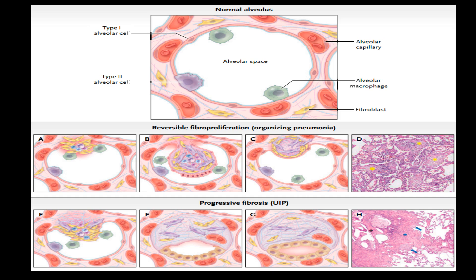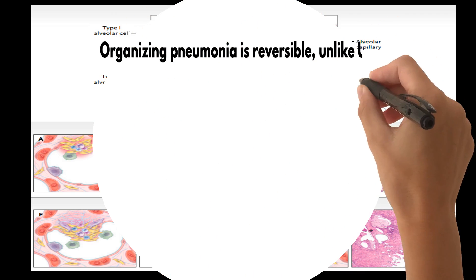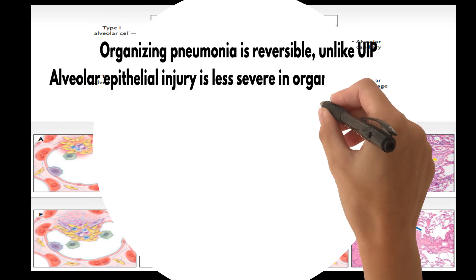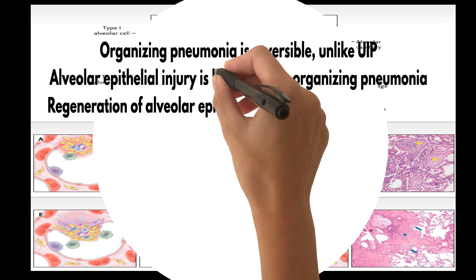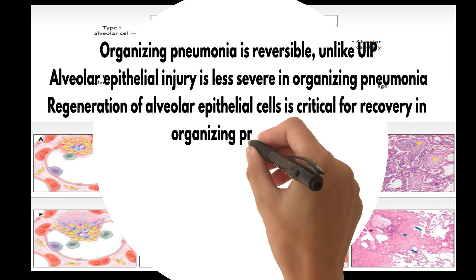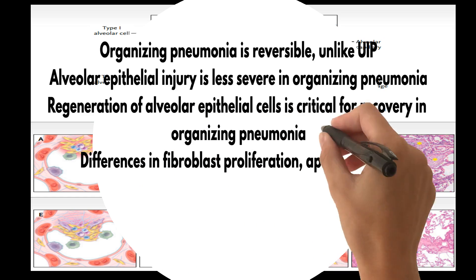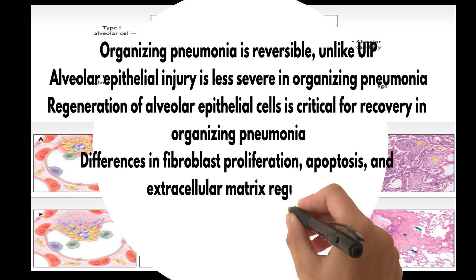Integrity and function of the alveolar unit are restored. Differences between organizing pneumonia and usual interstitial pneumonia (UIP): organizing pneumonia is reversible, unlike UIP. Alveolar epithelial injury is less severe in organizing pneumonia. Regeneration of alveolar epithelial cells is critical for recovery in organizing pneumonia. There are also differences in fibroblast proliferation, apoptosis, and extracellular matrix regulation.